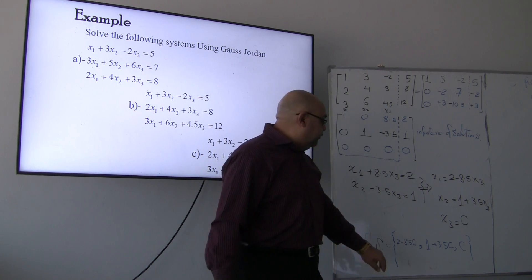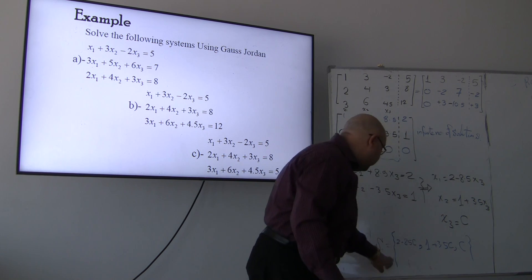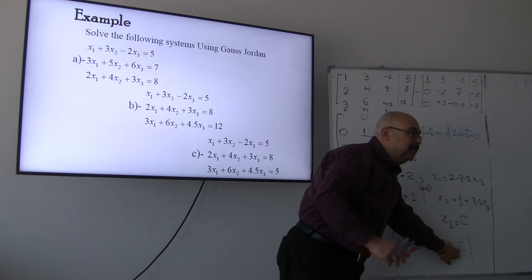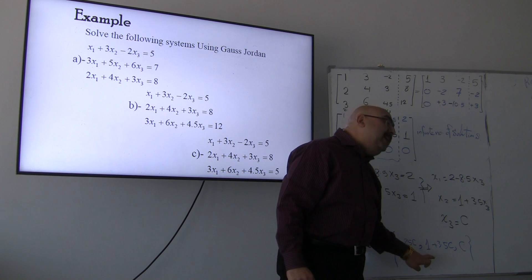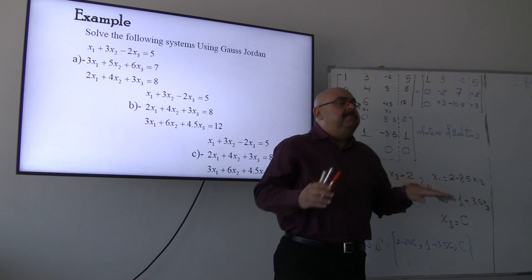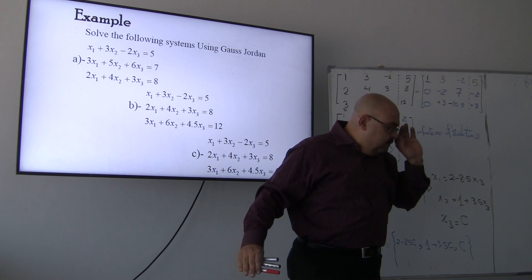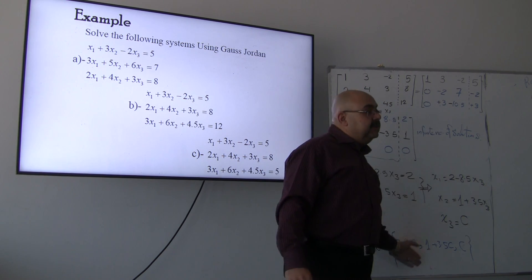If you want c equal to 0, the result will be 2, 1, and 0. That's the solution that will make the three equations correct at the same time. If you substitute c with negative 1, any number, just imagine the number line, and you are substituting with literally any number on the number line. This is why it's called infinite number of solutions.